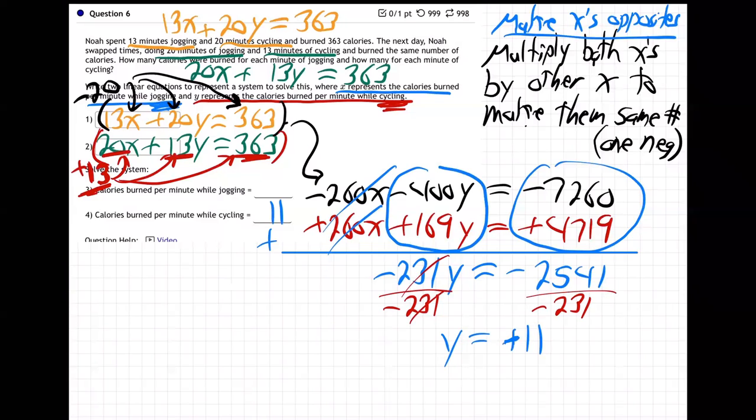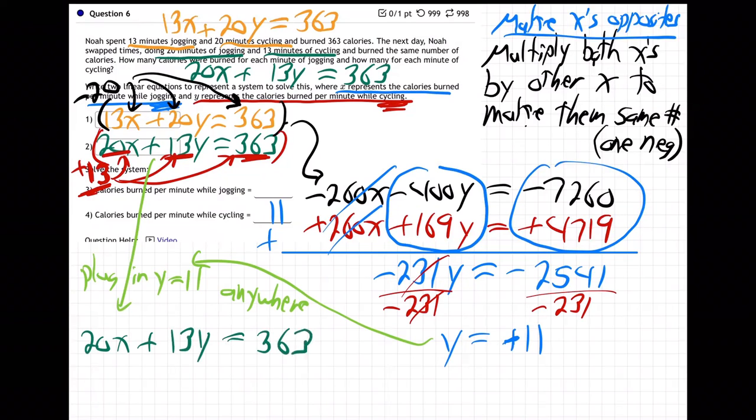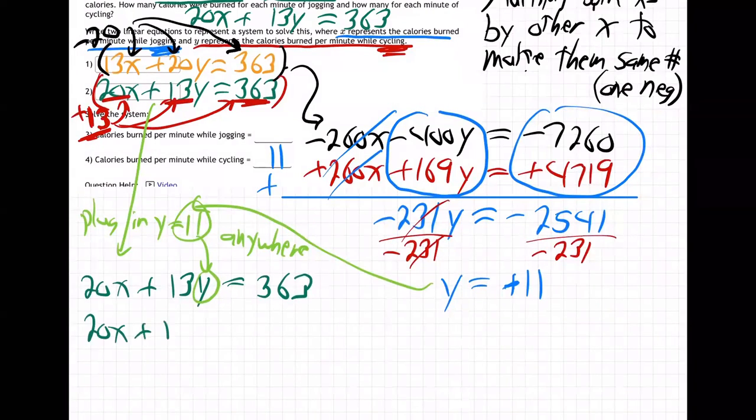So take this, plug in Y equals 11 anywhere you want. So I'm just going to grab like whatever, grab that second equation, which is 20X plus 13Y is 363. Grab that 11, pop it in right there. And then what do we get? 20X plus 13 times 11 equals 363.